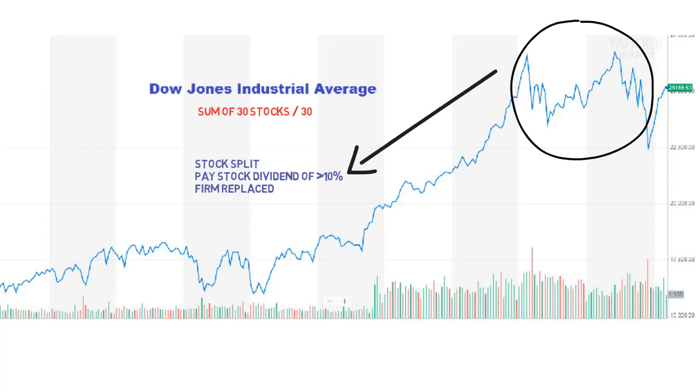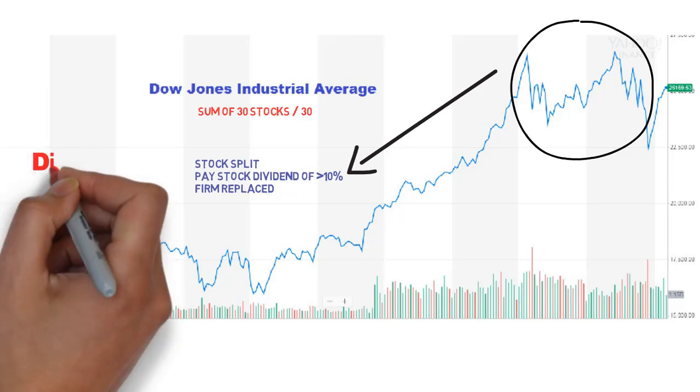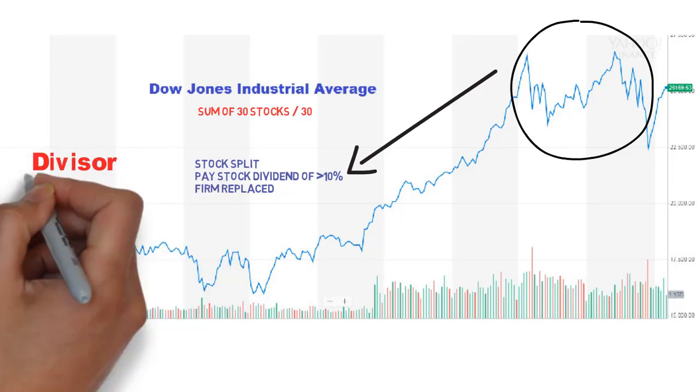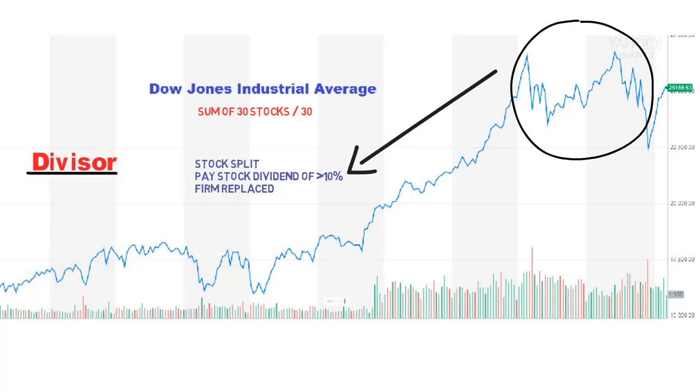When these events occur, the divisor used to compute the average price is adjusted so as to leave the index unaffected by the event. In the same way, the divisor is updated for stock splits. If one firm is dropped from the average and another firm with a different price is added, the divisor has to be updated to leave the average unchanged by the substitution.